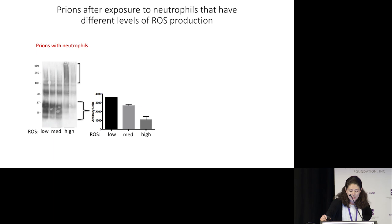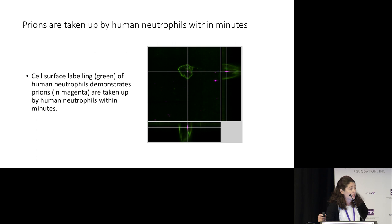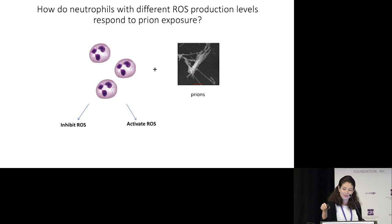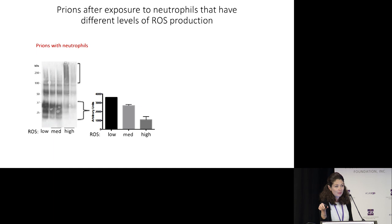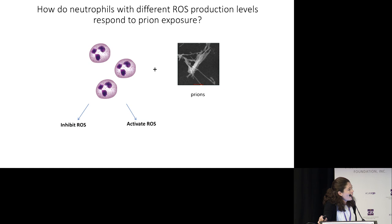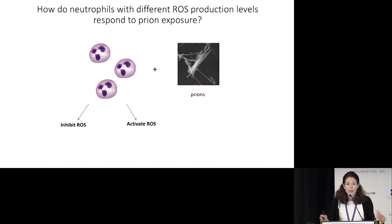But what happens when I change the ability of these neutrophils to produce these natural ROS disinfectants? I have chemicals in the lab that I can use to treat these neutrophils. These chemicals will either inhibit the production of these natural disinfectants,